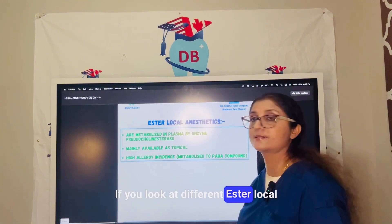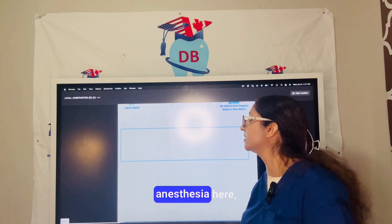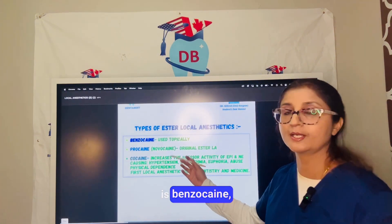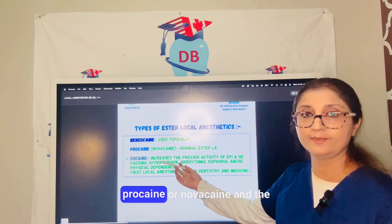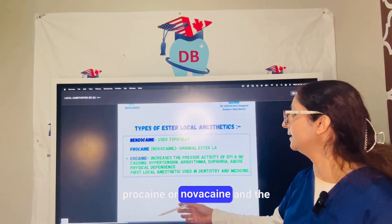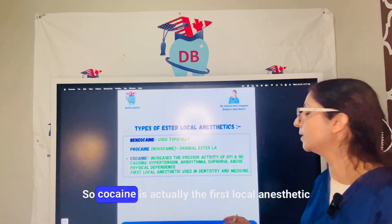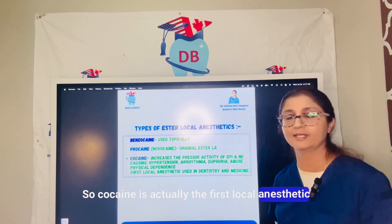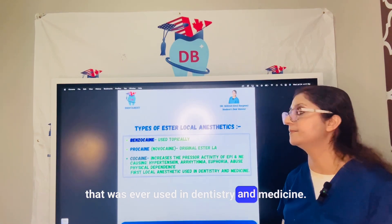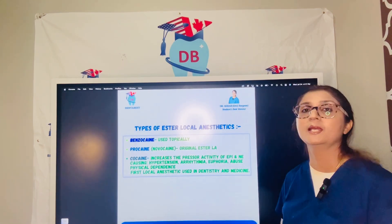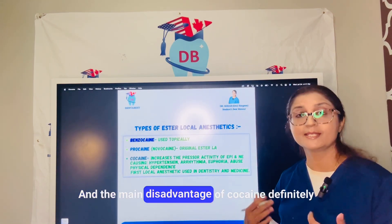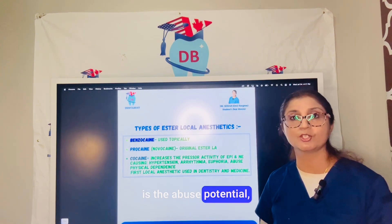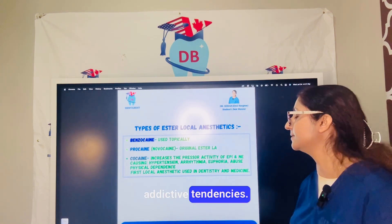Looking at different ester local anesthetics, we have benzocaine, procaine (also known as novocaine), and cocaine. Cocaine is actually the first local anesthetic ever used in dentistry and medicine. The main disadvantage of cocaine is its abuse potential and addictive tendencies.